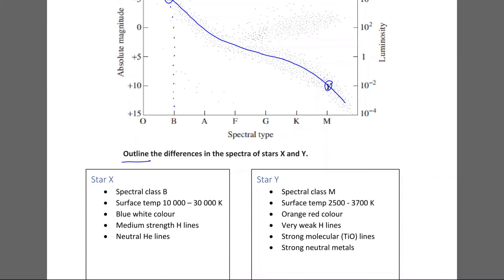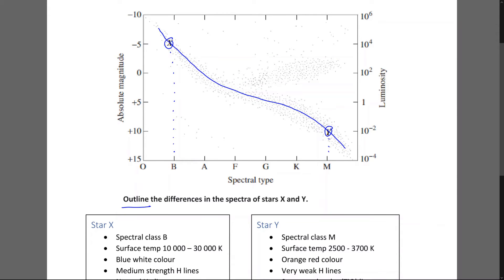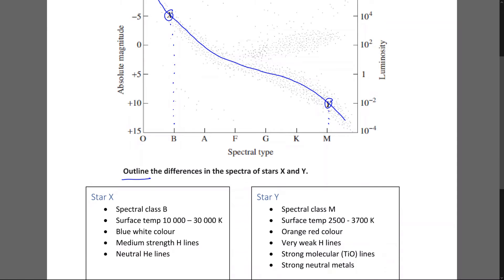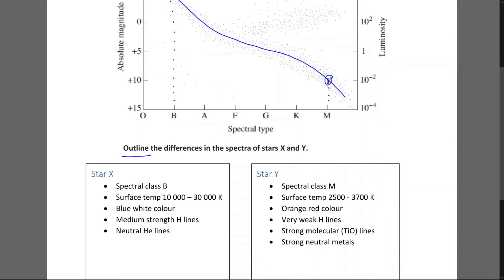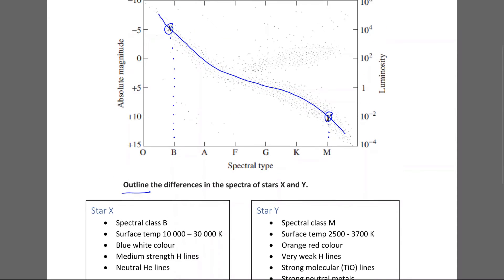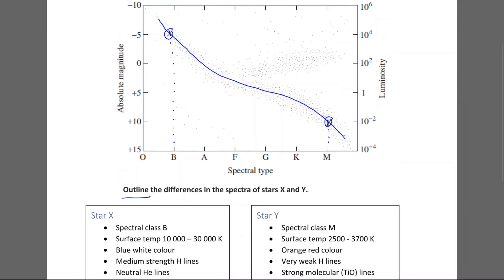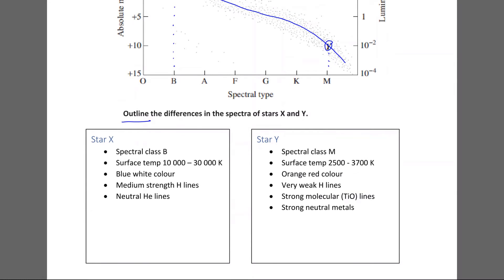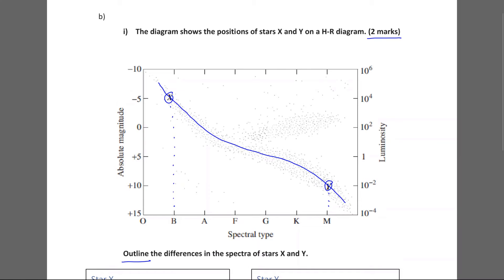So that's just for star X. For star Y, it's spectral class M. And it's in line with M. And for surface temp, it's between 2500 and 3700 Kelvin. It's an orange-red colour. It has very weak hydrogen lines. It has strong molecular lines, which are titanium oxide, strongest in titanium oxide. And it has strong neutral metals.